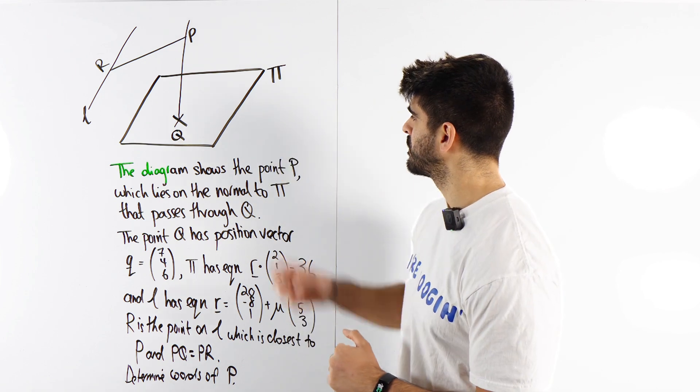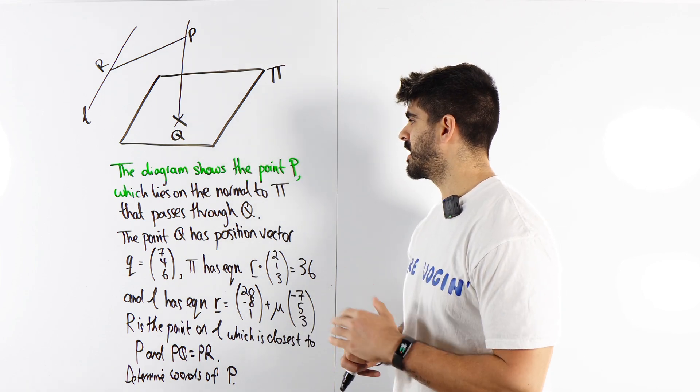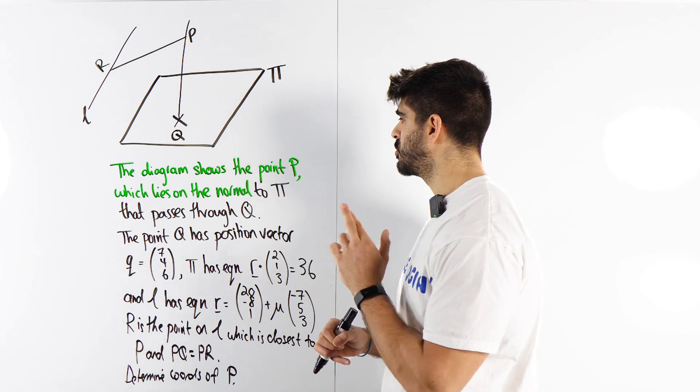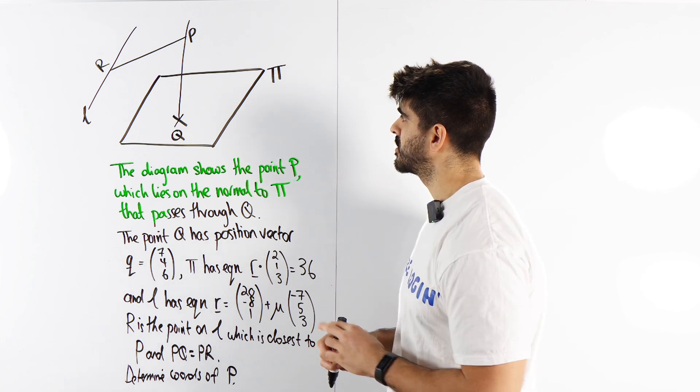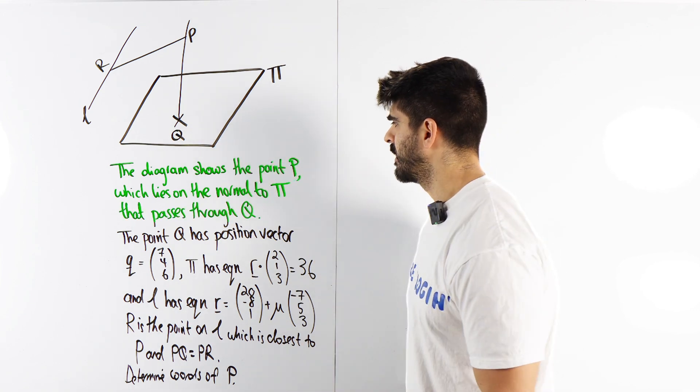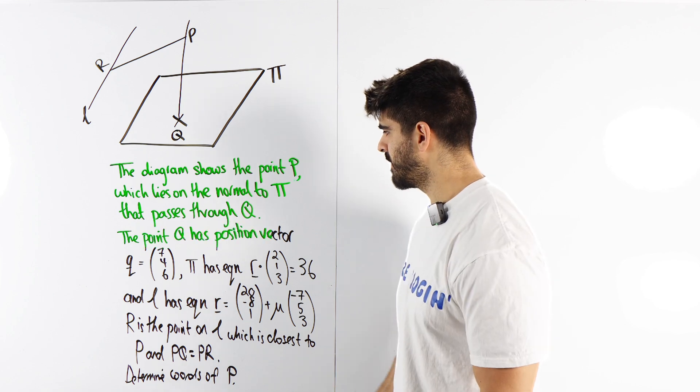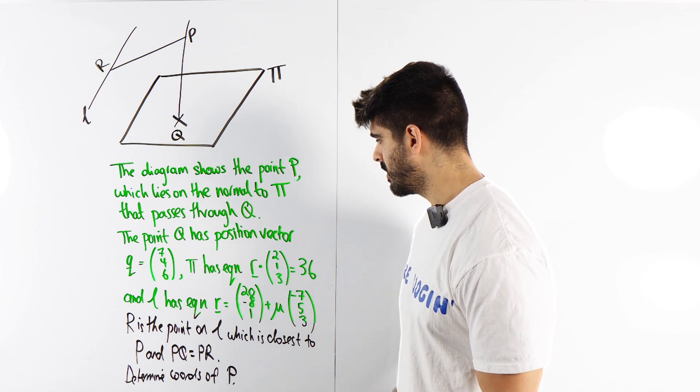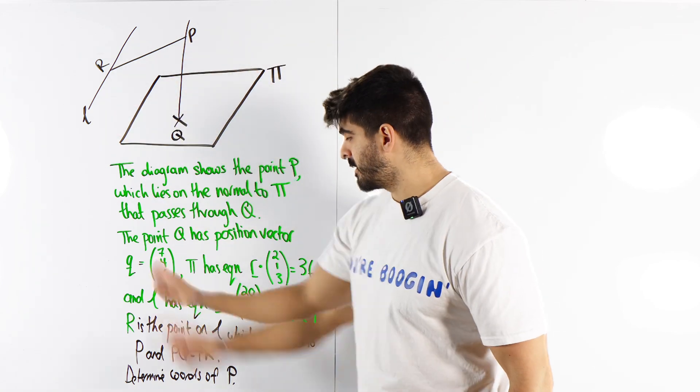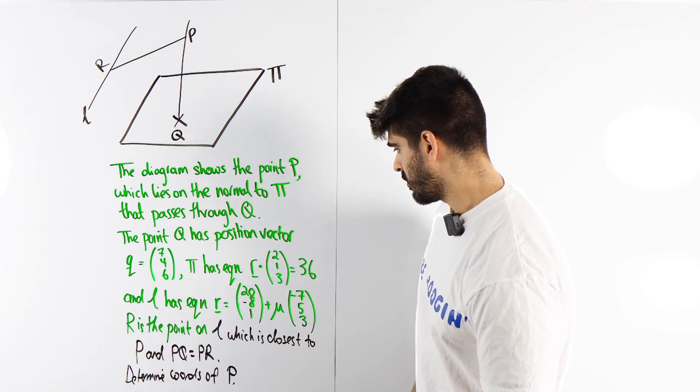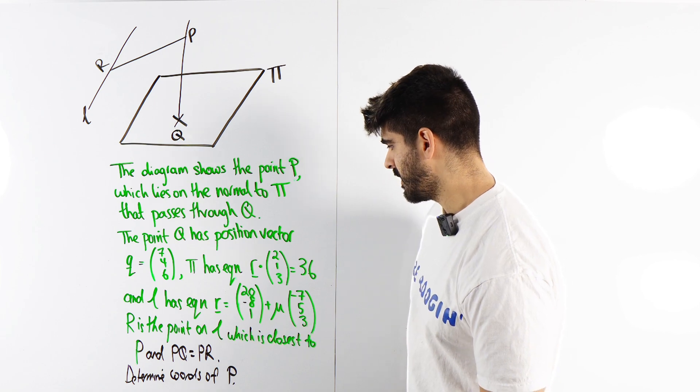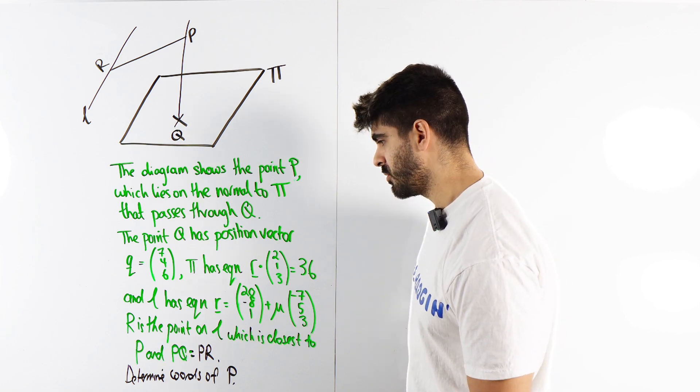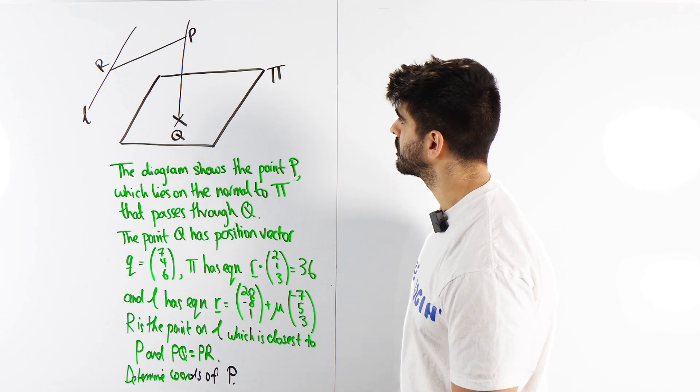It said the diagram shows the point P, which lies on the normal to pi that passes through Q. The point Q has position vector 7, 4, 6, pi has this equation, and L has that equation. R is the point on L which is closest to P, and PQ equals PR. Determine the coordinates of P.